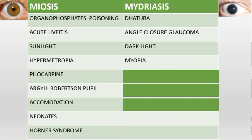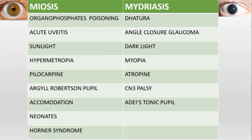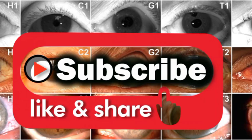Myopia — nearsightedness: these patients have large eyeballs, and so is the pupil. Atropine increases sympathetic activity, causing mydriasis. Cranial nerve 3 palsy: if cranial nerve 3 has pathologies such as strokes or ischemia, it causes loss of parasympathetic supply — this is passive mydriasis. Adie's tonic pupil is parasympathetic denervation; when the parasympathetic nerves are denervated, the sympathetic overtakes and causes mydriasis. That's all for miosis and mydriasis — thank you, doctors.